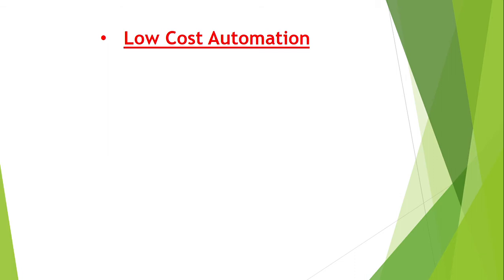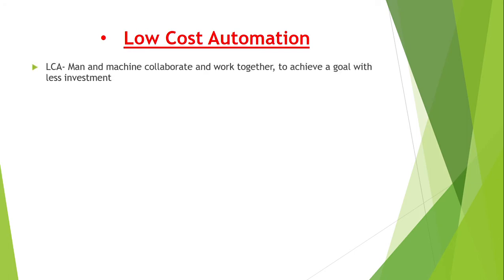Now, as we see the higher cost automation and low cost automation — Low Cost Automation, or LCA, is defined as the system where man and machine collaborate and work together to achieve the goal with less investment.